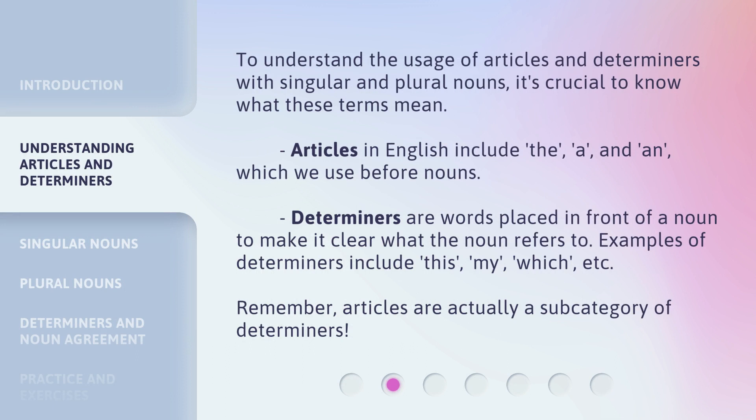To understand the usage of articles and determiners with singular and plural nouns, it's crucial to know what these terms mean. Articles in English include a, an, and the, which we use before nouns. Determiners are words placed in front of a noun to make it clear what the noun refers to. Examples of determiners include this, my, which, etc. Remember, articles are actually a subcategory of determiners.